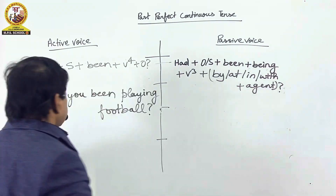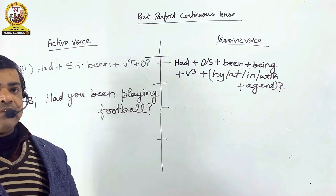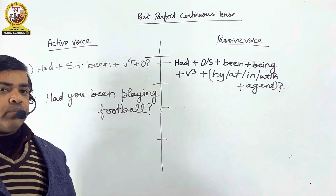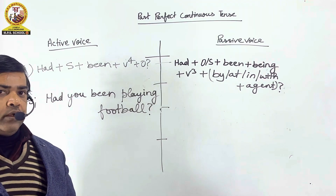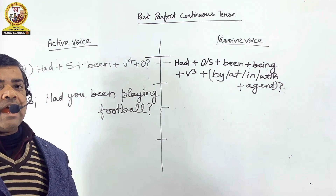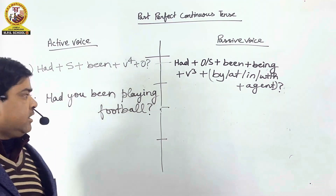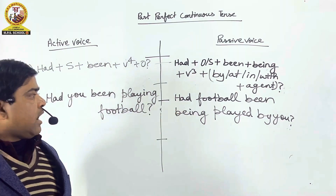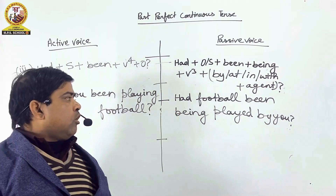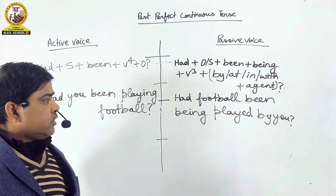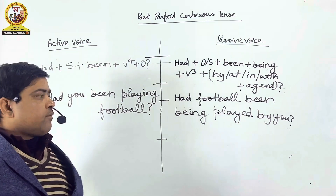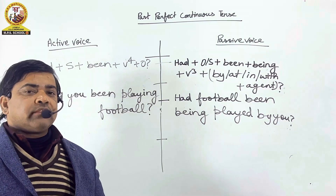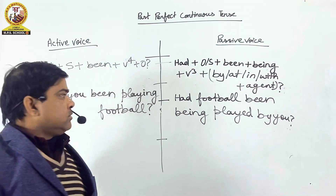The sentence in active voice is: 'Had you been playing football?' Kya aap football khelte rahe the? In passive voice, the sentence is: 'Had football been being played by you?' Kya football aapke dwara khela jata raha tha?